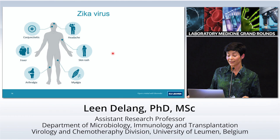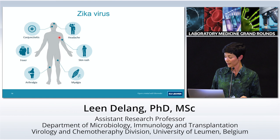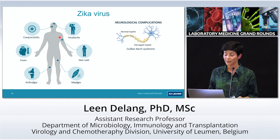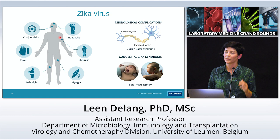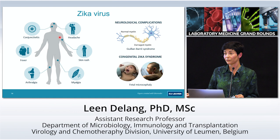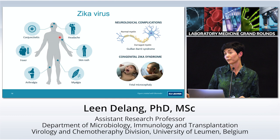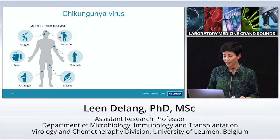A related virus to dengue is Zika virus. A person who gets Zika experiences similar symptoms — fever, skin rash — with conjunctivitis being more specific to Zika. Not many adults will have symptoms, but there can be severe neurological complications, such as Guillain-Barré syndrome, where the immune system damages the myelin of neurons causing paralysis. Best known is what happens when a pregnant woman gets infected: the virus can transmit to the fetus, causing congenital Zika syndrome, characterized by fetal microcephaly.